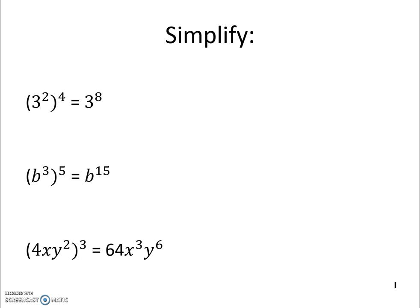Well, when I take 4 times 4 times 4, I get 64. And x cubed is x cubed. And y squared cubed, again, we multiply, we don't add. So we get y to the 6th.